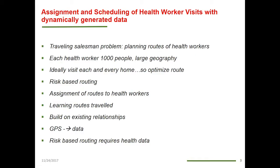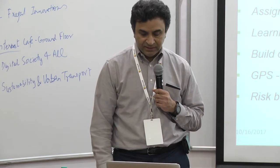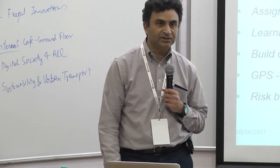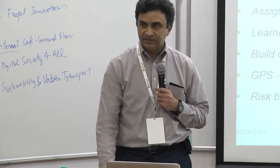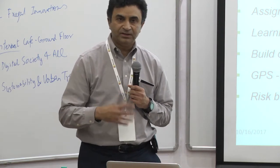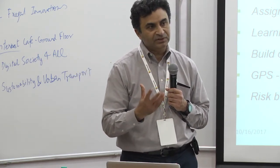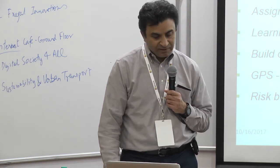Immediate collaboration is assignment and scheduling of health worker visits with dynamically generated data. The challenge is we have health workers and they have to plan routes — each person is assigned maybe a thousand people they have to visit on a large geography. They have to ideally visit each and every home, but that may not work, so you may do a risk-based routing. People who have a higher risk, you want to make sure that they do get visited. This problem becomes one of a traveling salesman problem, but interesting because some places have a higher value to be visited.